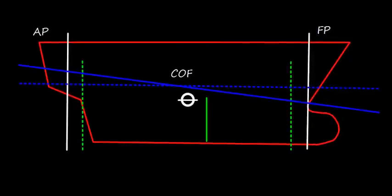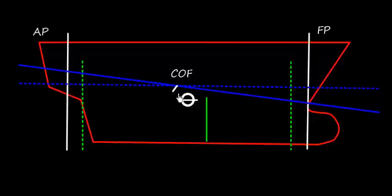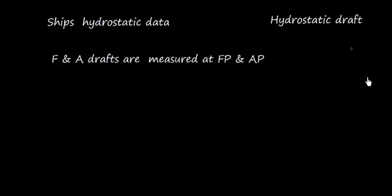In the last video I discussed that we need to obtain the hydrostatic draft to calculate the displacement, because all the hydrostatic particulars are tabulated for hydrostatic draft. The center of flotation is the point about which the ship trims, and the draft at the center of flotation is called the hydrostatic draft. The hydrostatic draft is obtained by considering forward and aft drafts measured at the forward perpendicular and aft perpendicular.